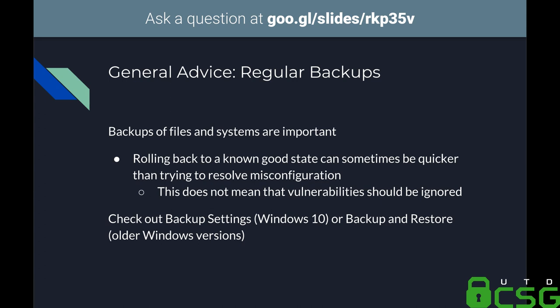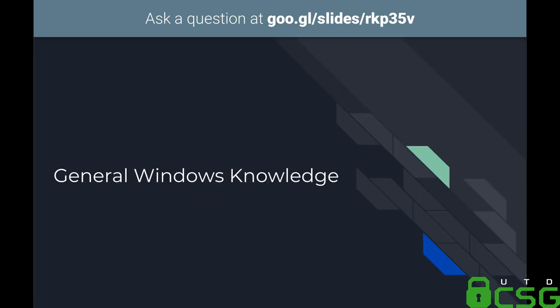Another piece of general advice is regular backups, because sometimes it's easier to scrap what's going wrong and go back to a known safe point. However, if there's a vulnerability being exploited, it will be in the older backups too, so you still need to fix vulnerabilities. For backups on Windows 10, it's called Backup Settings; in older versions, it's Backup and Restore.